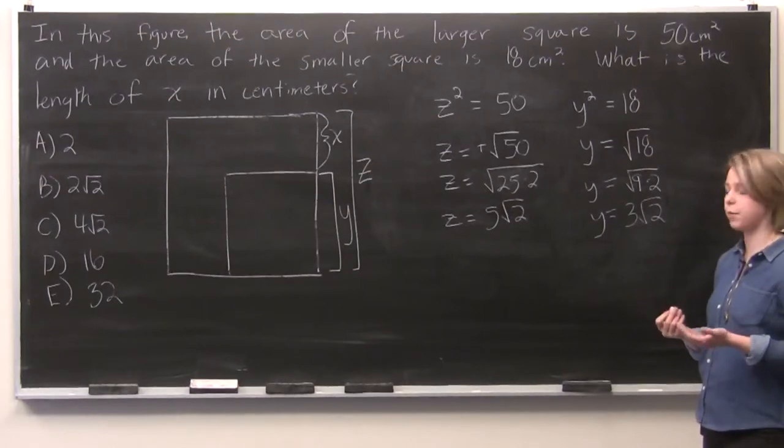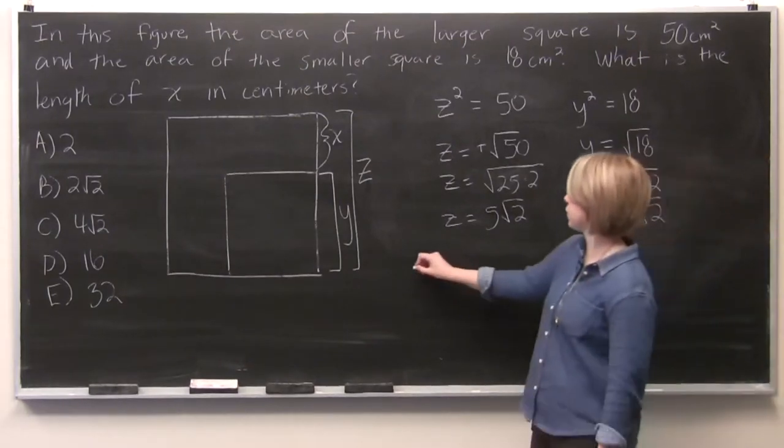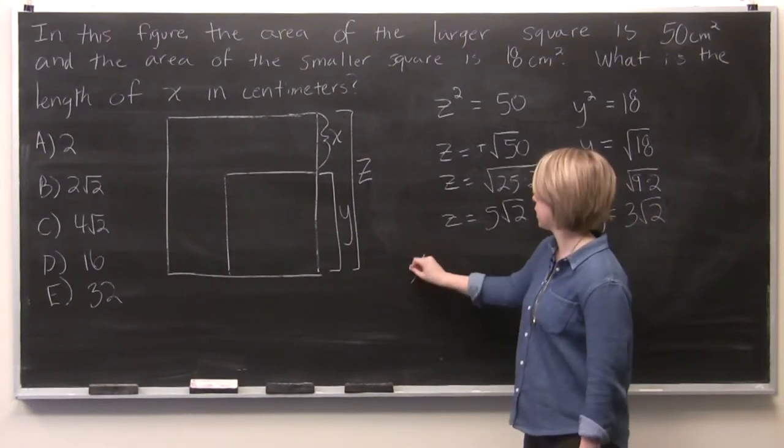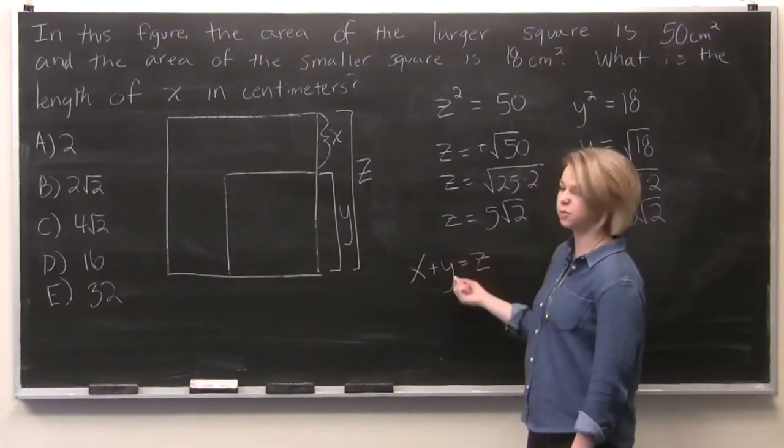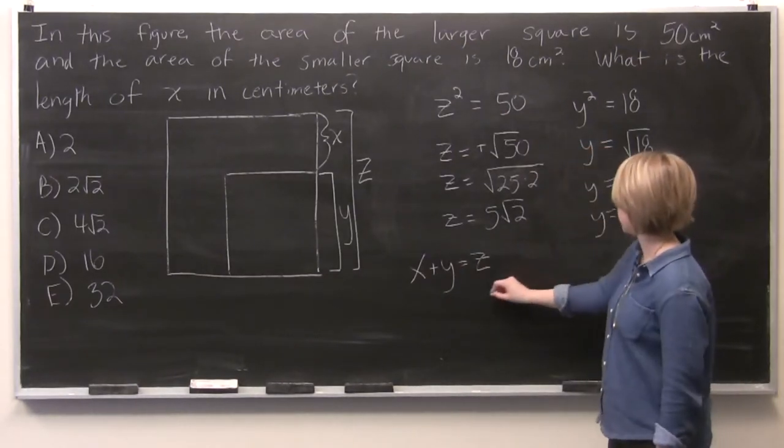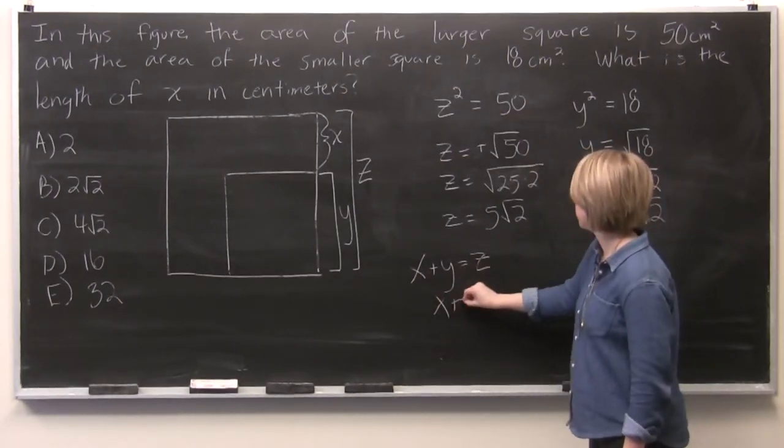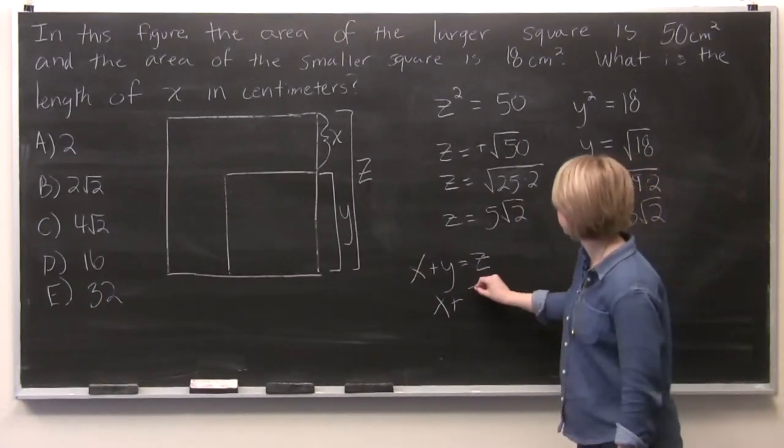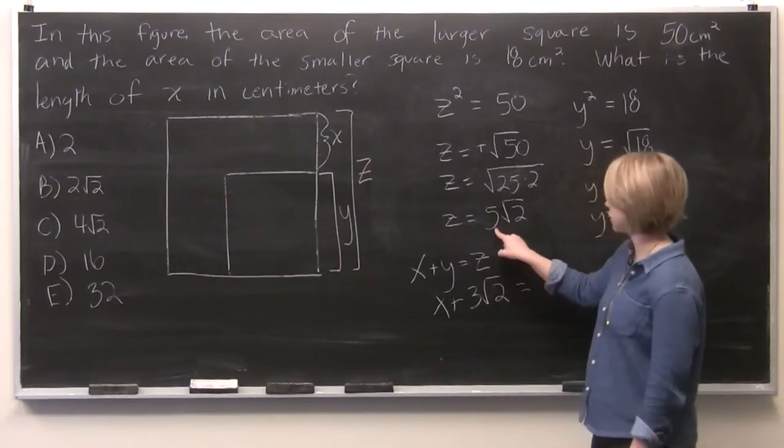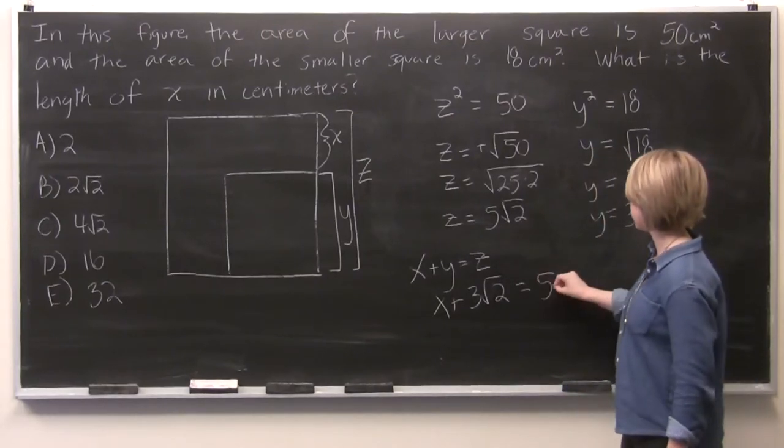And so we know now that we can solve for x because x plus y is equal to z. And so we've got x plus our y, 3 times the square root of 2, is equal to our z, 5 times the square root of 2.